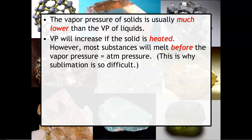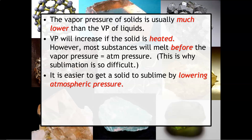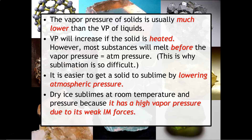Vapor pressure will increase if the solid is heated, much like with liquids. However, most substances will typically melt before the vapor pressure equals the atmospheric pressure — that is why sublimation is so difficult. It is often easier to get a solid to sublime by lowering the atmospheric pressure, similar to how it's easier to get a substance to boil if you decrease the atmospheric pressure. Dry ice, or solid carbon dioxide, will sublime at room temperature and pressure because it has a very high vapor pressure due to the weak intermolecular forces that hold the solid together.